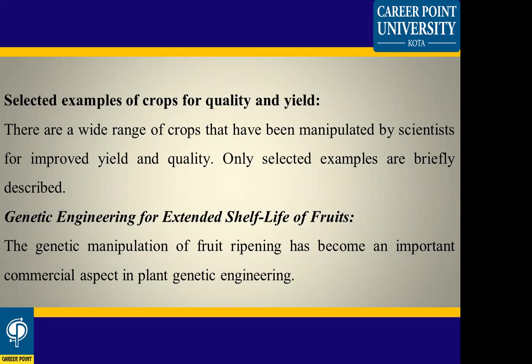Next is selected examples of crops for quality and yield. There is a wide range of crops that have been manipulated by scientists to improve yield and quality. One selected example is genetic engineering to extend the shelf life of fruit — using genetic manipulation through fruit ripening.